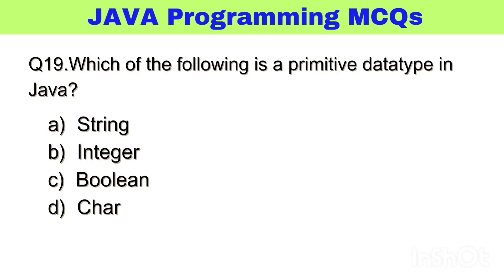Question number 19. Which one of the following is a primitive data type in Java? The right answer, option D: char.